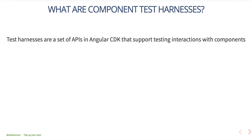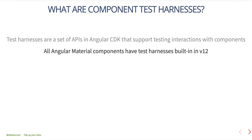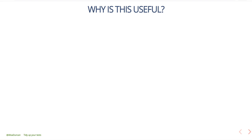You can tidy your tests and focus on writing meaningful tests with test harnesses. Test harnesses are a set of APIs in the Angular CDK that support testing interactions with components. The idea is based off of the page object pattern, which is commonly used to write integration-style tests. All Angular Material components have test harnesses using the Angular CDK testing API as a base, and that is fully available for all components starting in Angular Material v12, although the effort started in v9.